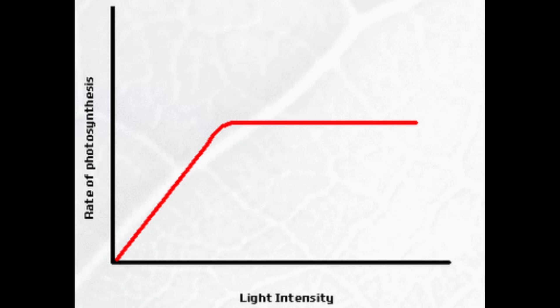The plant we're going to use is elodea, which is pondweed, and the reason we use this is because it's an aquatic plant. So as it photosynthesizes, it will produce oxygen bubbles which we can then count to give us an idea of how much photosynthesis is happening.